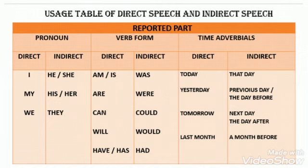Now let us see the usage table for the reported part — pronoun, verb form, and time adverbials. For pronouns: in direct speech 'I' becomes 'he or she' in indirect speech; 'my' becomes 'his or her'; 'we' becomes 'they.'